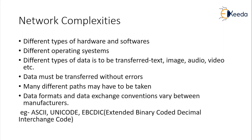First, we will see what the different network complexities were before the OSI model for data communication. The first complexity was different types of hardware and software — different computers had different types of hardware configurations and different types of software. This was one of the complexities for the network when communicating between two machines. There were also different operating systems, and we needed a platform, a protocol, and a model which could work on all types of hardware, software, and operating systems so that data communication over the network would be proper.